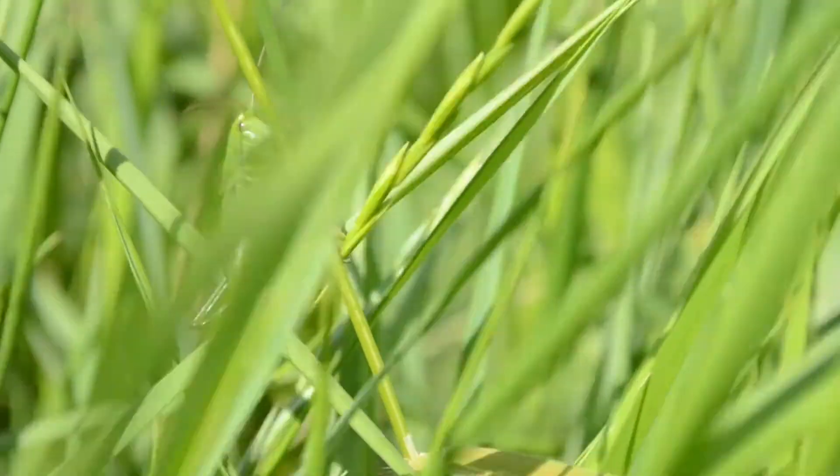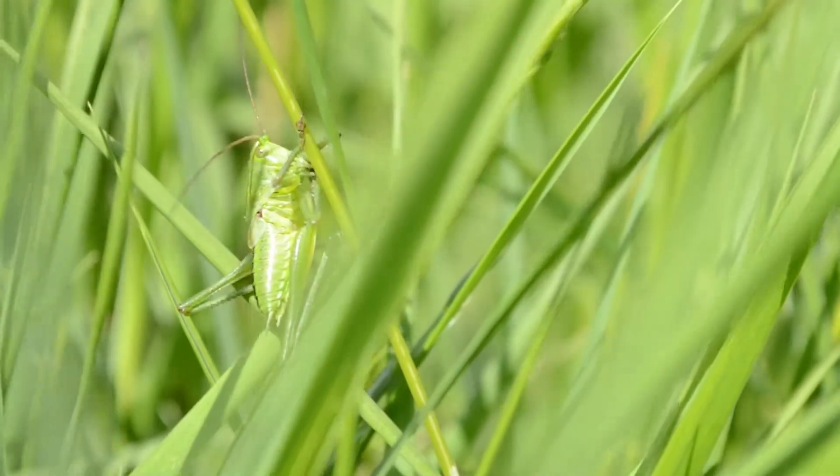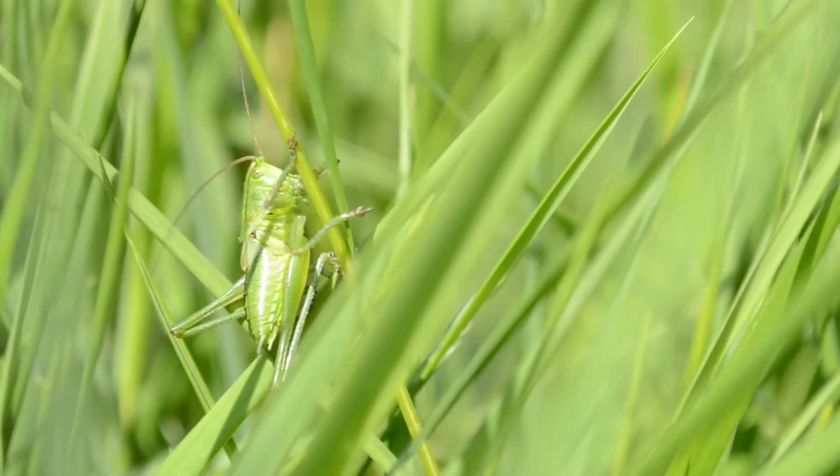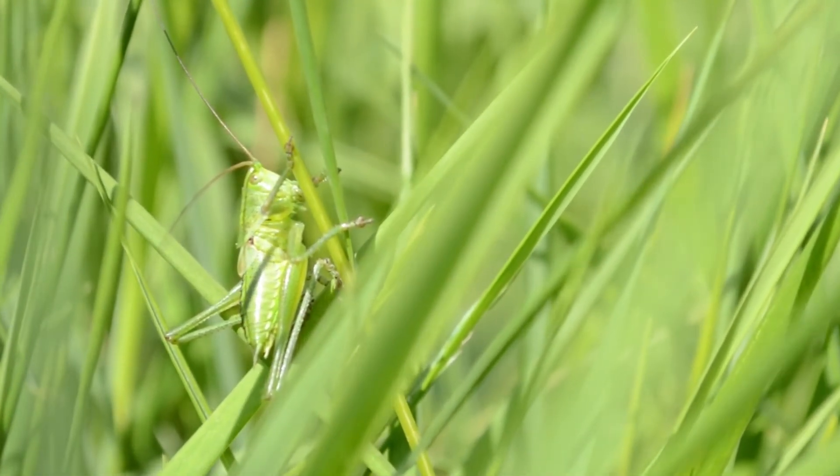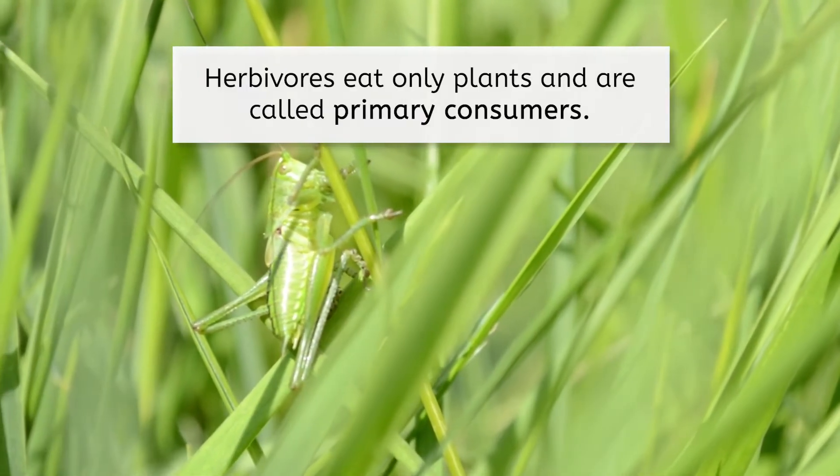Oh look, that grasshopper is adorable! He's just enjoying his breakfast of grass, so we won't bother him. Grasshoppers are herbivores, meaning they only eat plants, and are called primary consumers.